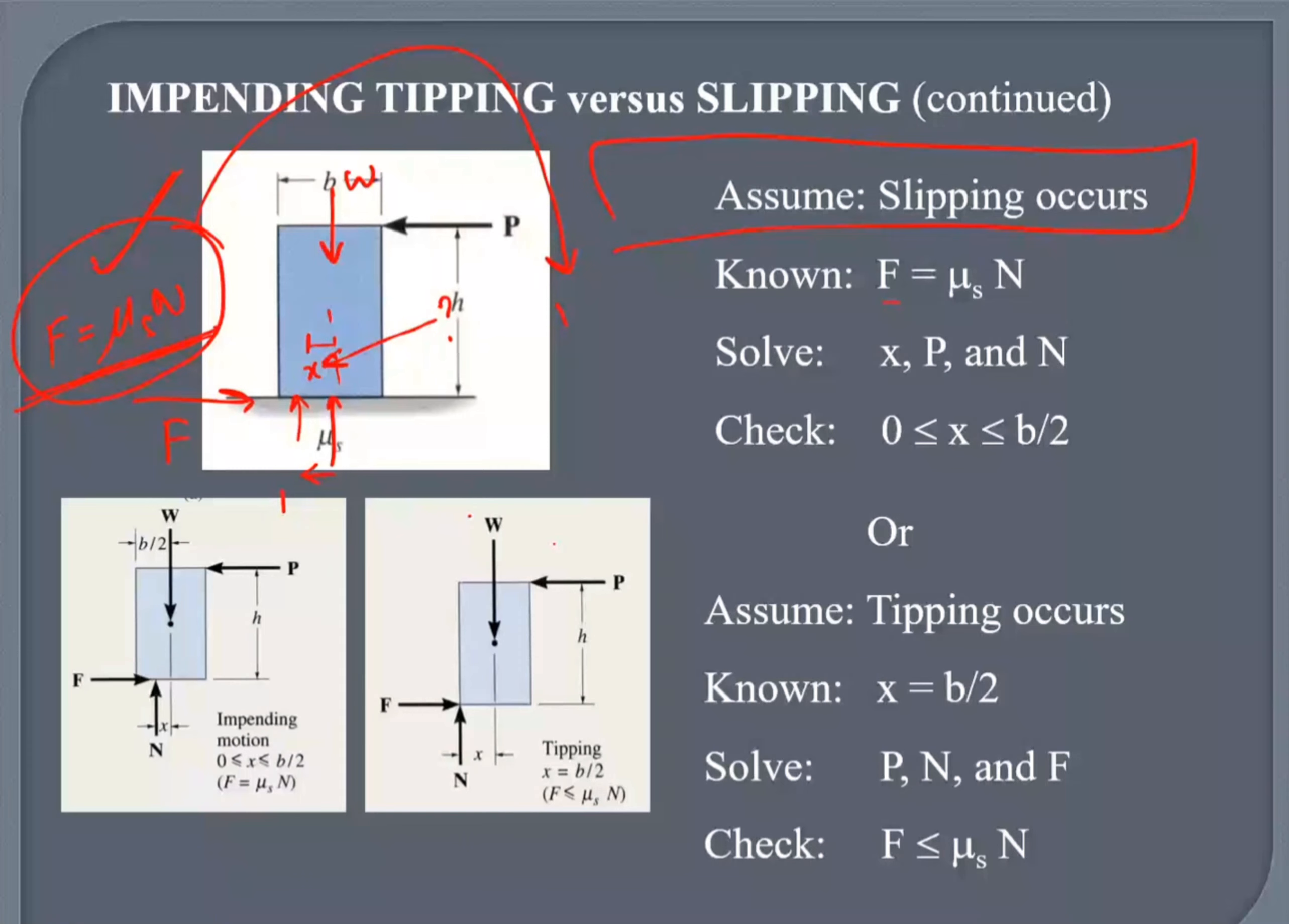So let's just see the tipping. The scenario is tipping. Tipping means it did not slip. It did not slip means that my friction force F. That's my F here. This is my again W. And this is my R.